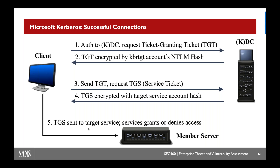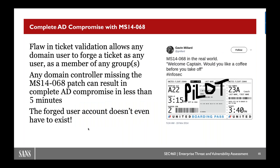Next, we send the ticket granting ticket to the KDC to ask for a service ticket. That service ticket is encrypted with the hash of the target account, and then we use that TGS to ask the server for access to that service. When we start thinking about vulnerability space in Kerberos, this is really important to know because each of these three components has its own attack surface. We see attacks like golden ticket attacks, silver ticket attacks, and Kerberoasting — all taking a part of this authentication exchange and attacking it directly.